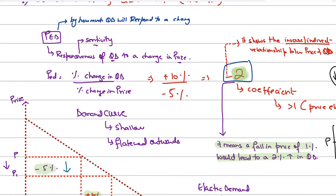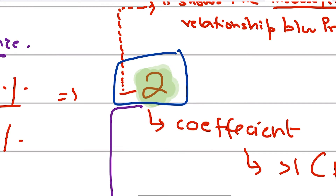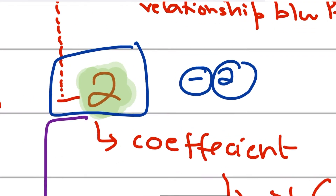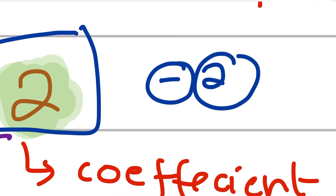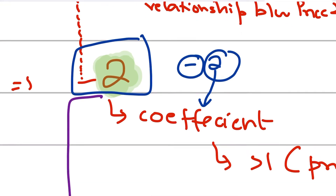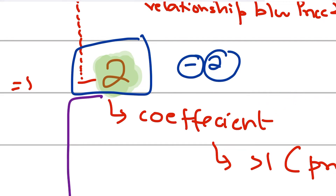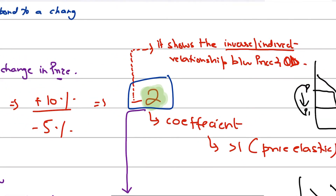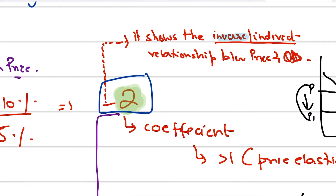Now let's break down minus 2. There is a minus sign and there is the numerical value 2. The numerical value 2 is known as the coefficient of PED. The minus sign is representing the inverse or indirect relation between price and quantity demanded — because if price falls, quantity demanded rises, as the law of demand teaches us.